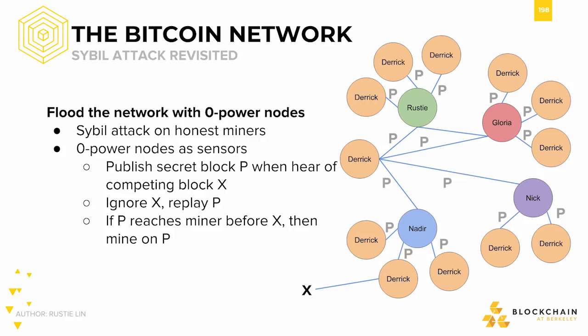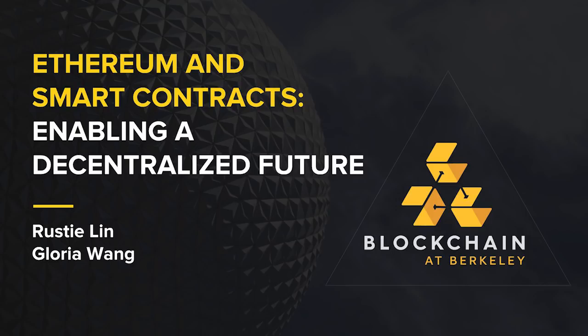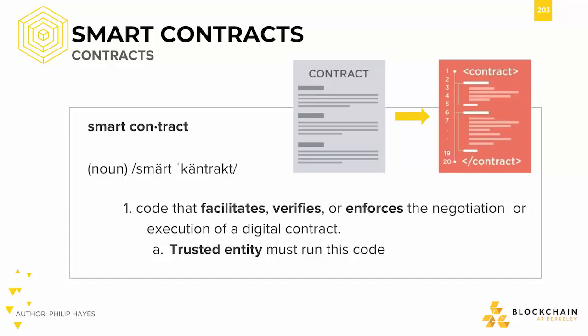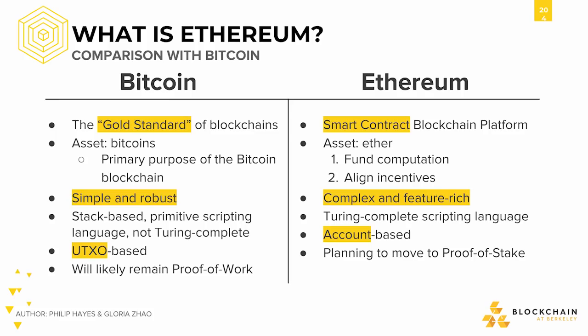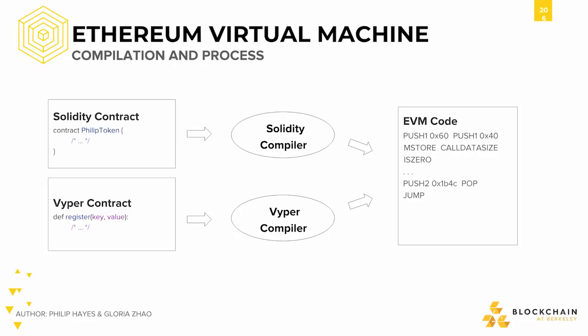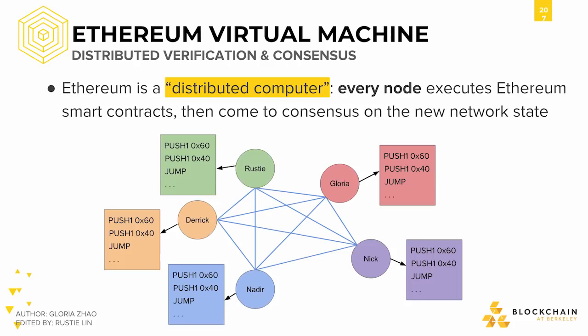Finally, after fully dissecting Bitcoin, we got into Ethereum and smart contracts, learning how the special properties of Bitcoin were used to make this new platform for smart contracts. We defined what a contract and a smart contract were, and then compared Bitcoin with Ethereum. We looked at the various types of accounts on Ethereum and examined how these contracts are compiled down to Ethereum Virtual Machine, or EVM, code. We saw that Ethereum replicated a distributed computer where every node executes Ethereum smart contracts and then comes to consensus on the new network state.